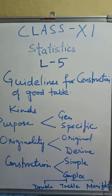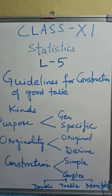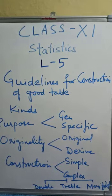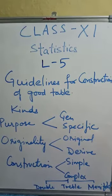Now let's proceed to our second topic, that is kinds of tables. A table can be classified according to three concepts: purpose, originality, and construction.